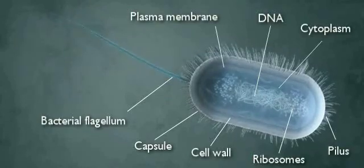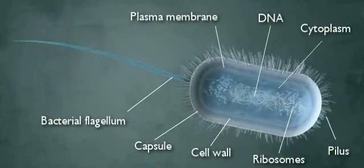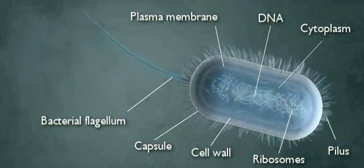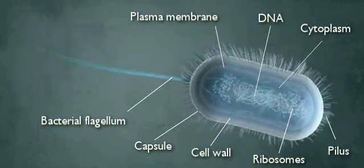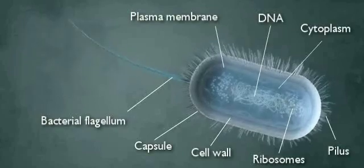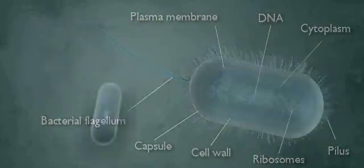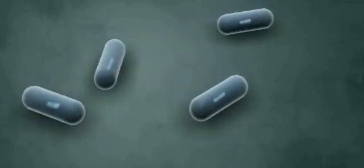Bacteria can also be pathogenic, secreting poisons to attack host cells. Bacterial pathogens cause diseases including food poisoning, tuberculosis, salmonella, and diphtheria in humans. Bacteria can reproduce rapidly by simple asexual reproduction called binary fission — splitting in two. E. coli can double every 20 minutes.